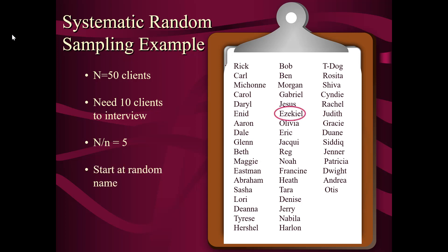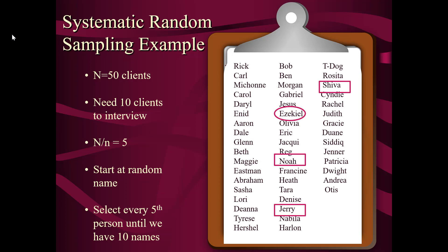Let's say I have a population of 50 clients and need to interview 10. So 50 divided by 10 equals 5 — that's my K. I pick a random name to start with — in this case, Ezekiel. Then I select every fifth person until I have 10 names: Noah, Jerry, Shiva. When I ran out at the end of the column, I went back to the top. After Shiva: Dwayne, Andrea — and when I reached the end of the list again I went back to the left column — picking Carol, Glenn, Sasha, and Bob. Those are the 10 names systematically but randomly picked.